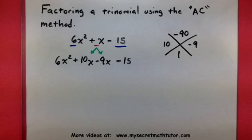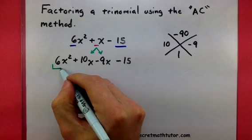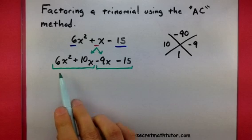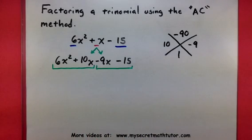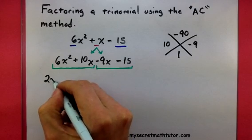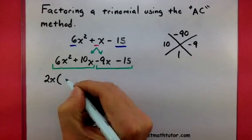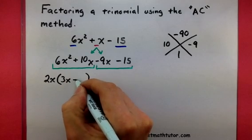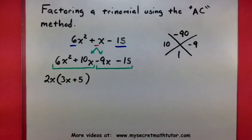Why did I split the middle term using this AC method? The reason is I can now use factor by grouping and take these terms two at a time. Let's first look at these two and ask ourselves, do they have anything in common? Well, 6 and 10 — I can factor out a 2, and they both contain an x, so we will take out a 2x. What's left over? A 3x plus 5.